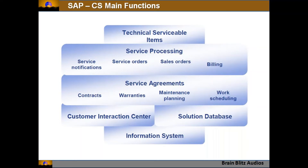A sales order is created for billing purposes to the customer, and against the sales order, an invoice or billing document is generated and sent. Another function is service agreements — different types of contracts between the customer and service provider, such as lump sum contracts or time-and-material contracts. Another type of agreement is warranty, which comes along with the sale — within one or two years, all repairs are covered by the service provider.